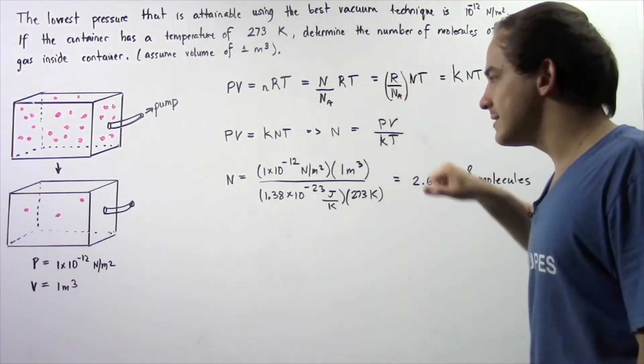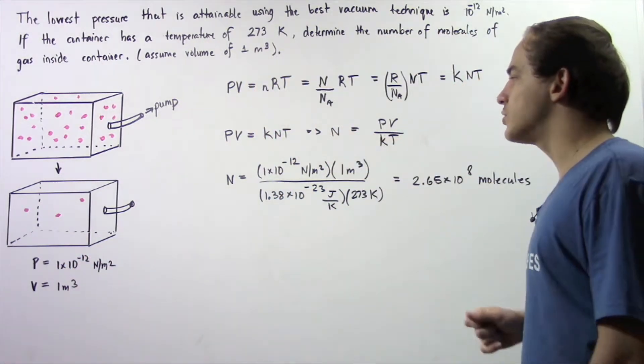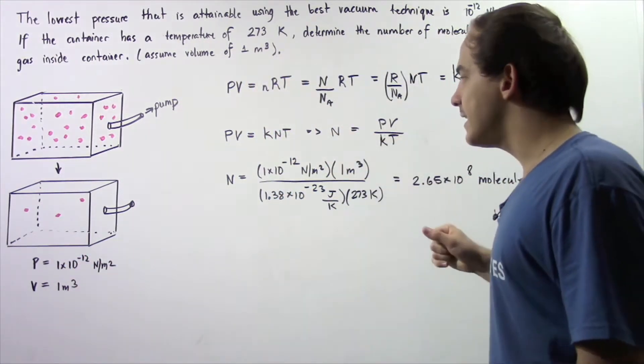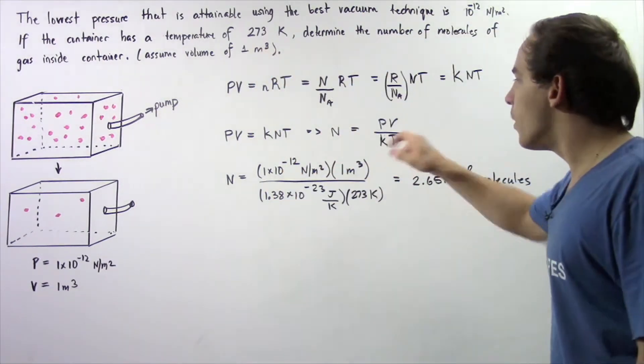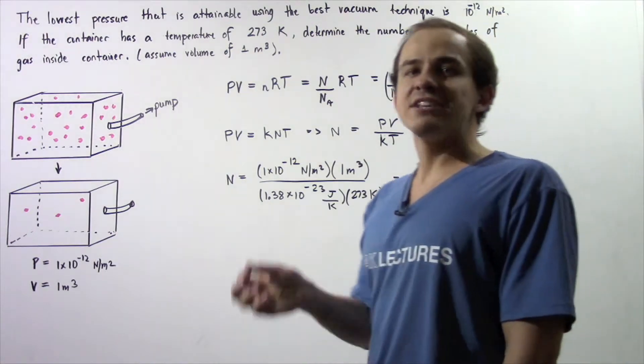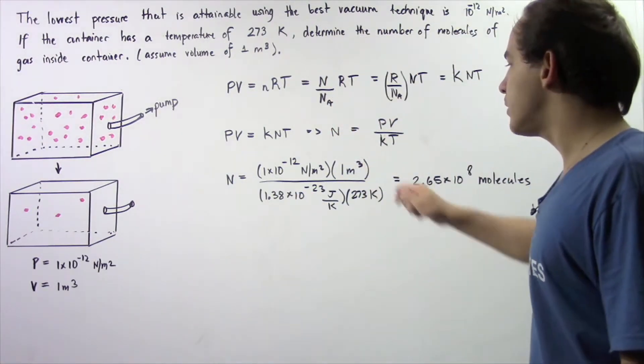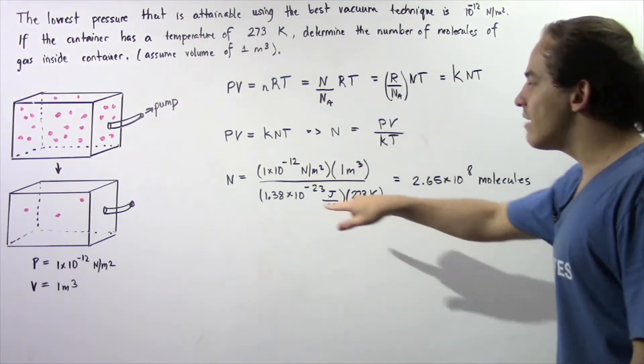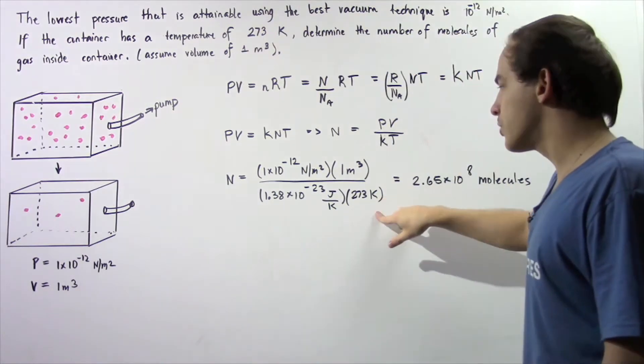Now we know what P is, it's given to be 1×10^-12 newtons per meter squared. We know what V is, it's given to be 1 meter cubed. We know what the Boltzmann constant is, that's 1.38×10^-23 joules per Kelvin, and we multiply that by our temperature given in Kelvin, 273.